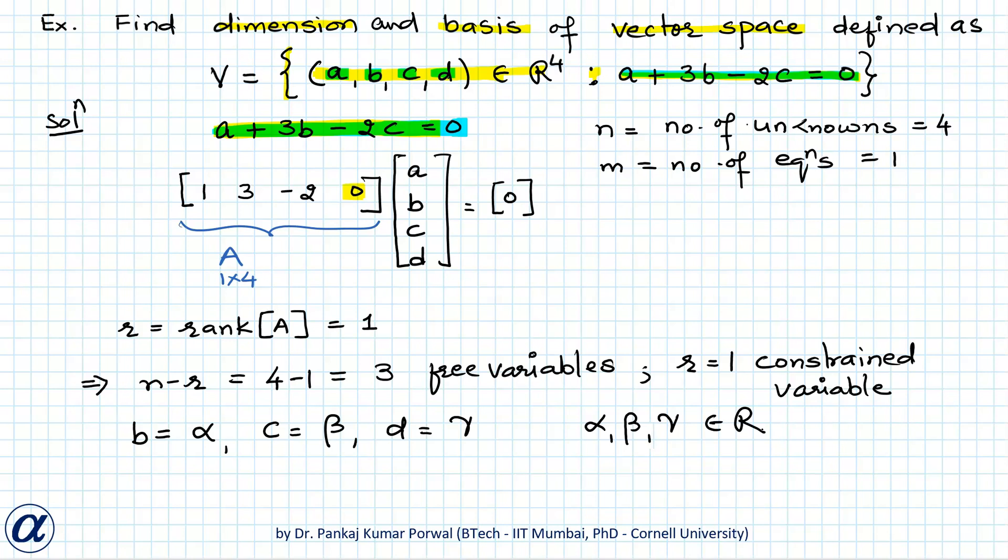Then I can solve for a using our equation by substituting these values of b, c and d in that equation. So that gives me a plus 3 alpha minus 2 beta equals 0. This gives me a equals minus 3 alpha plus 2 beta.